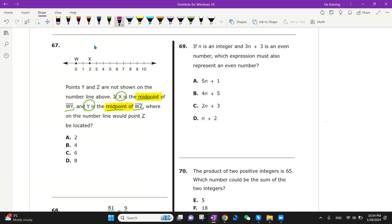If x is the midpoint between w and y, and w is on the left side two away, then y has to be on the right side two away. So that means it would be at four. That would be letter y.